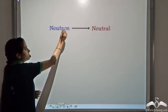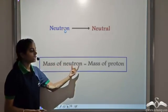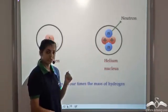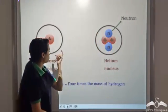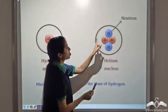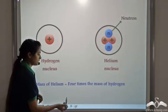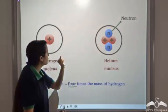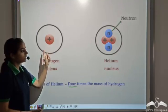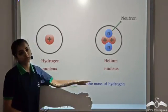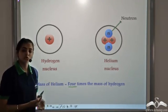He concluded that the neutron is neutral in nature and has no charge on it. Later, experiments showed that the mass of the neutron is equal to the mass of the proton. Hence, the mystery of the mass of the helium nucleus was solved. Helium nucleus has 4 times the mass of hydrogen nucleus because it has 2 protons and 2 neutrons. Since the mass of a neutron equals the mass of a proton, and hydrogen has only 1 proton, these 4 particles — 2 protons and 2 neutrons — make the mass of helium 4 times the mass of hydrogen. This is how neutrons were discovered.